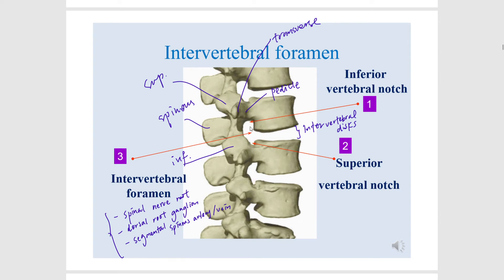The last one is the whole area here, called the intervertebral foramen. As I've said in a previous video, the word 'foramen' means hole. Here's a large hole, and this hole contains the spinal nerve root, the dorsal root ganglion, and the segmental spinous artery or vein. This is the third intervertebral foramen.